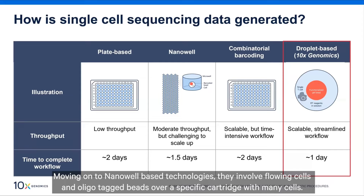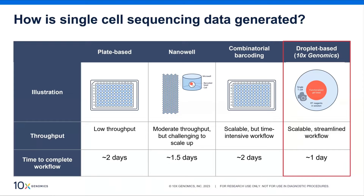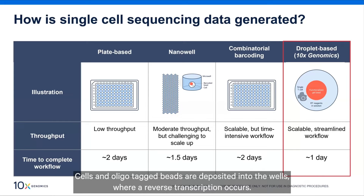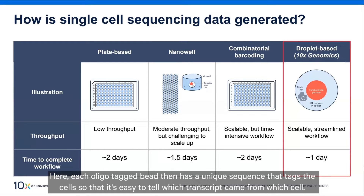Moving on to nano well-based technologies, they involve flowing cells and oligo-tagged beads over a specific cartridge. Cells and oligo-tagged beads are then deposited into the wells where reverse transcription occurs. Each oligo-tagged bead has a unique sequence that tags the cells, making it easy to identify which transcript came from which cell.